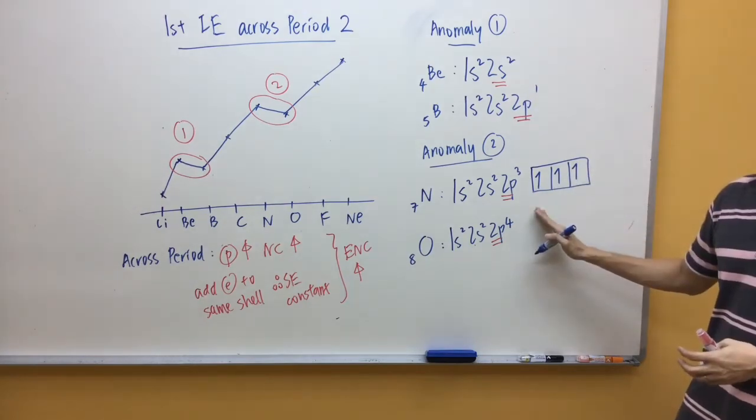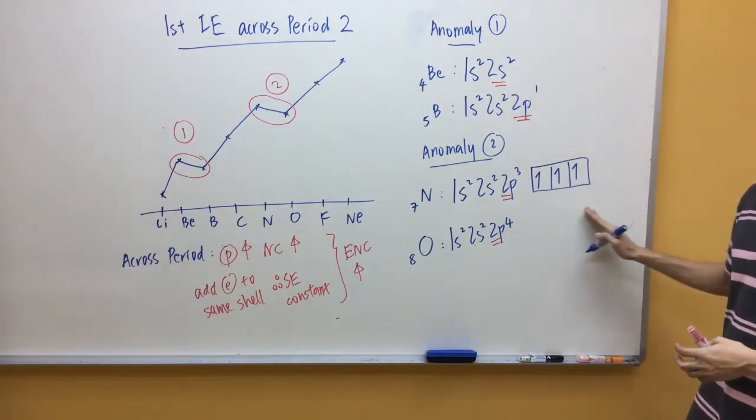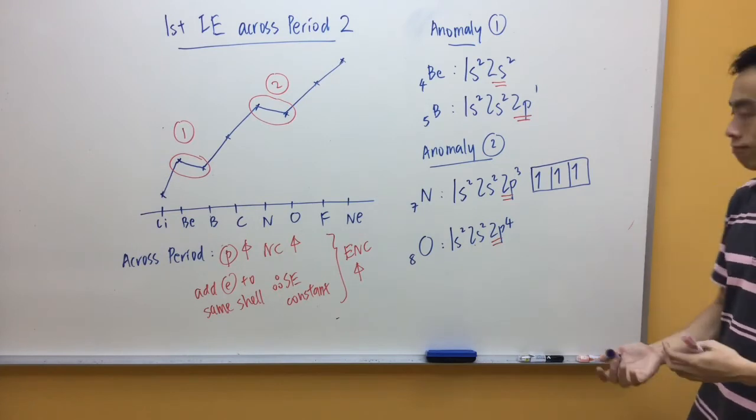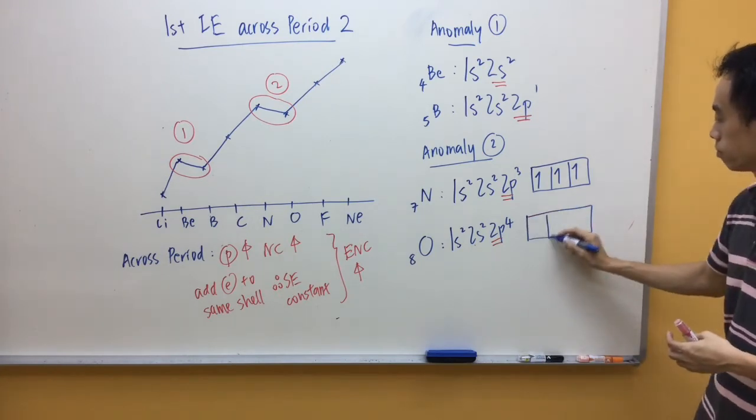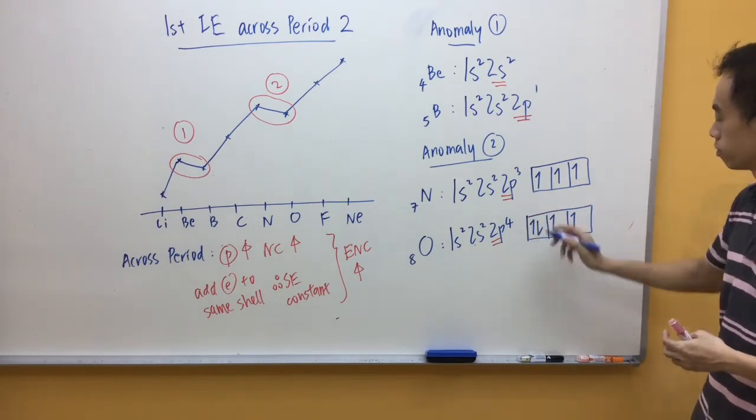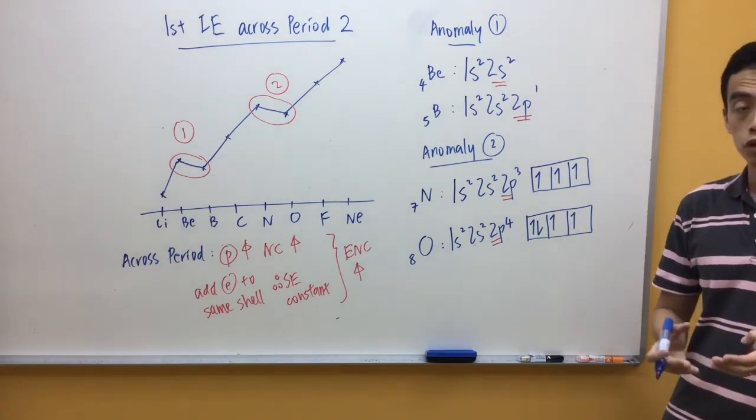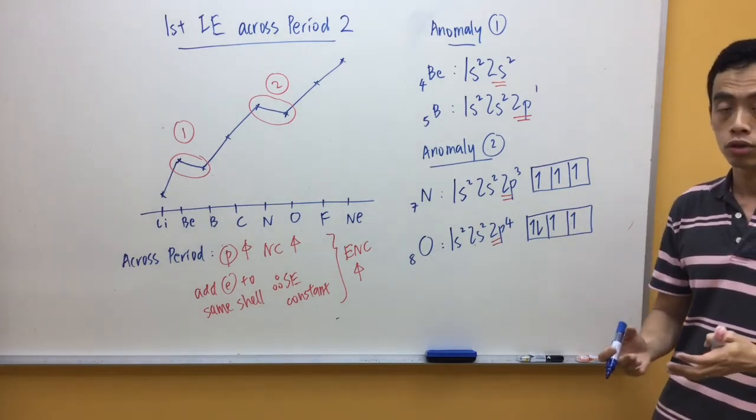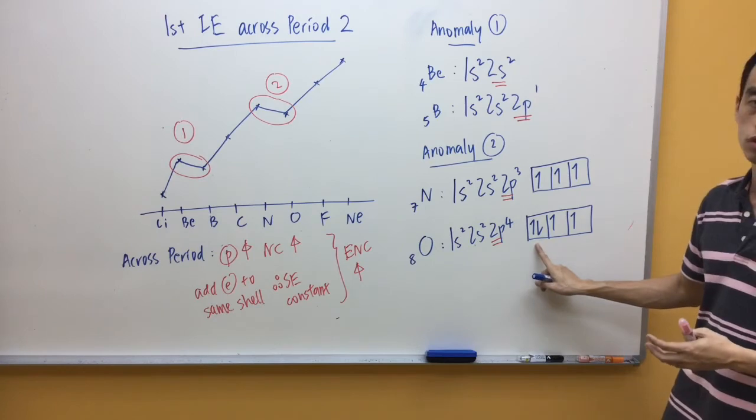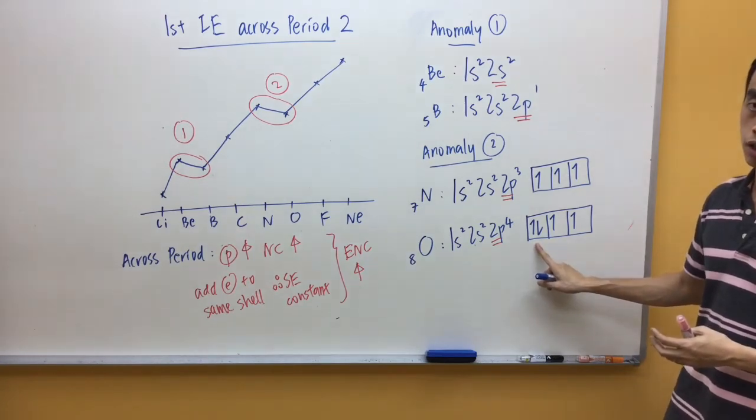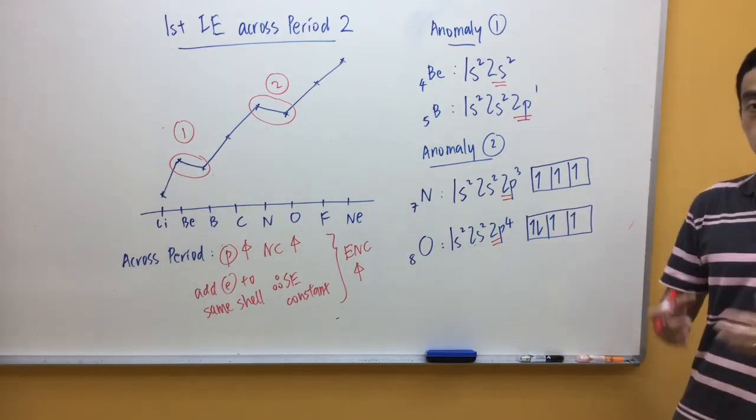Now, arranging three electrons in my 2p subshell, all of them have to be singly paired and they must have the same spin. Now, for oxygen, I have an additional electron. There is nowhere else this electron can go, but it has to pair up with this electron in the first orbital.